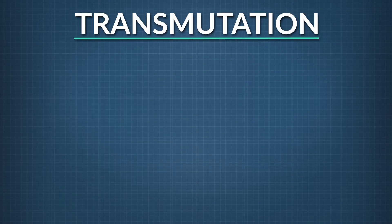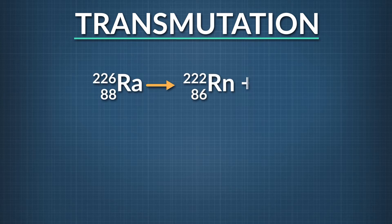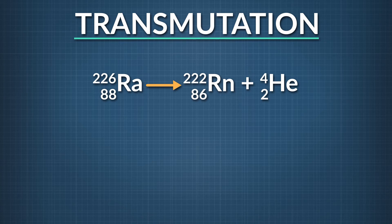These radiation events that change an atom's identity are called transmutations. Basically, these nuclear reactions transform one element into another. In order for the identity of an atom to change, the number of protons must change. Here are two transmutation examples.